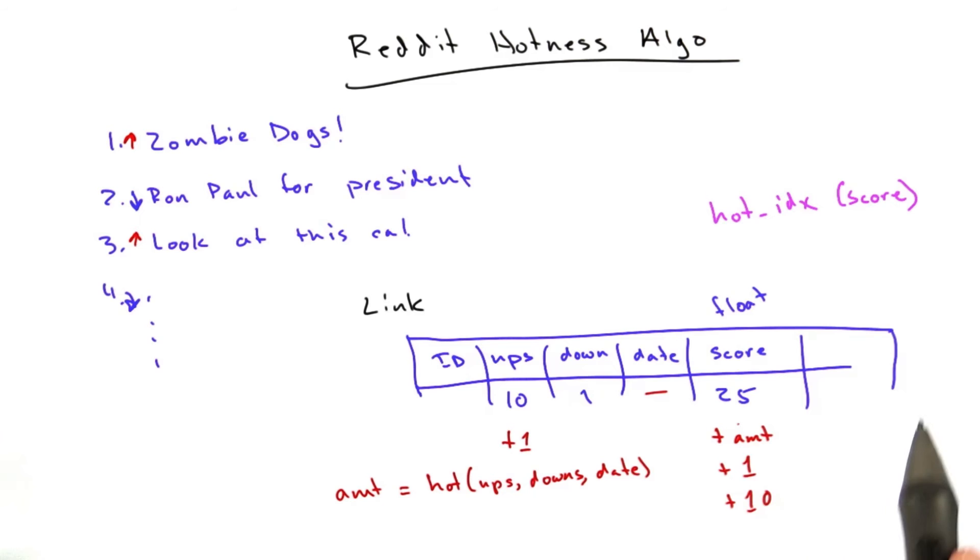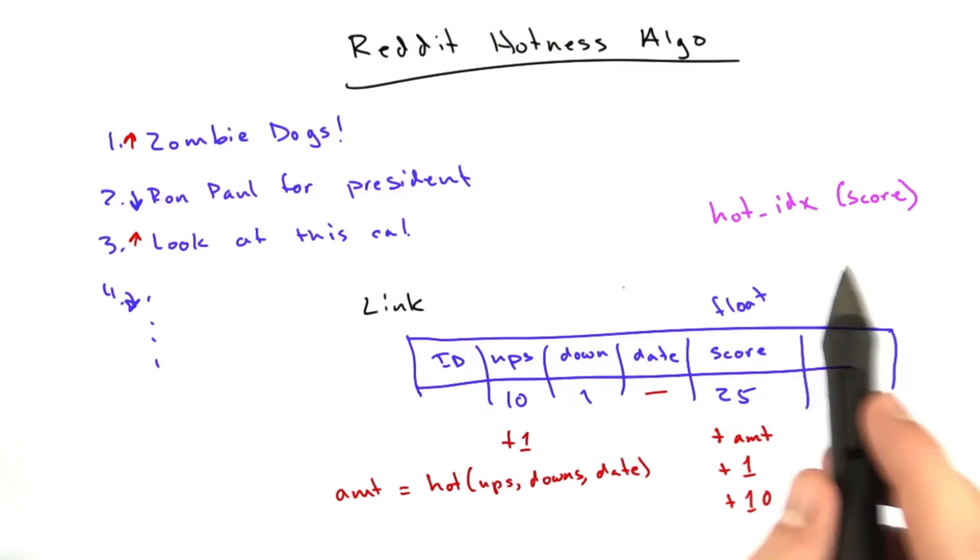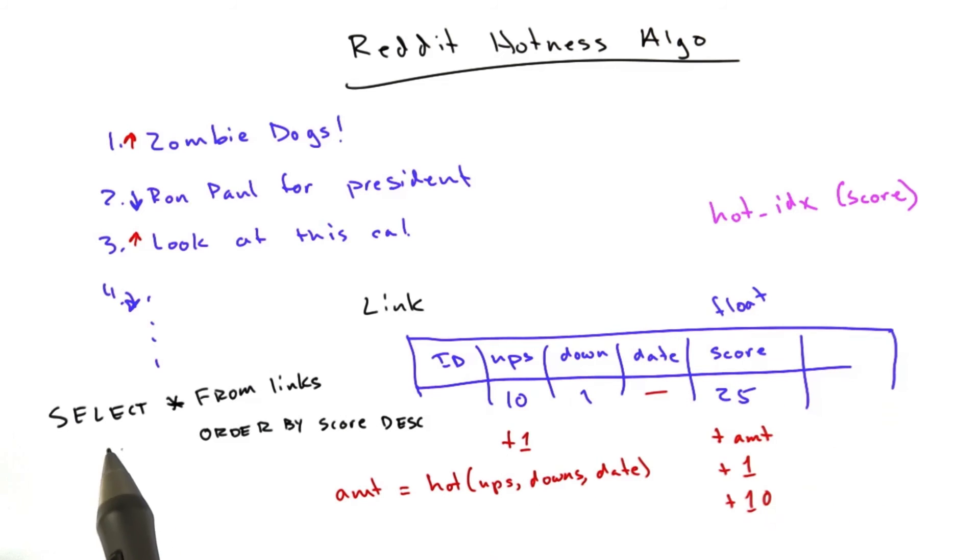And it's really actually very simple, and it's a very fast query we can do. We can just say, effectively, something like this: Select star from links, order by score descending. And then we get the hottest links on Reddit.